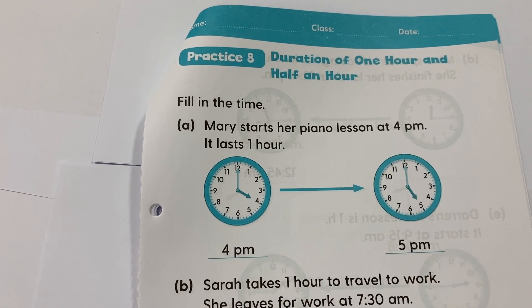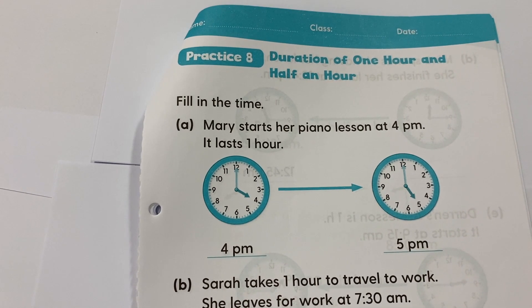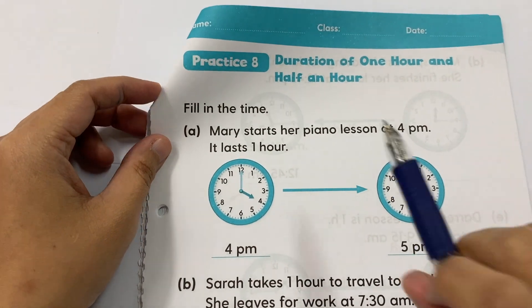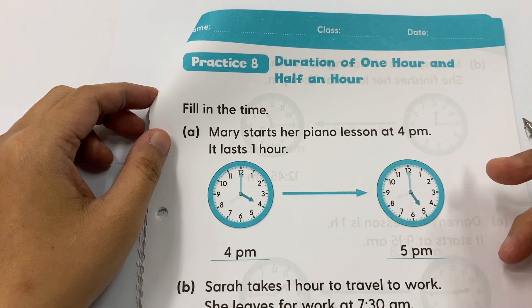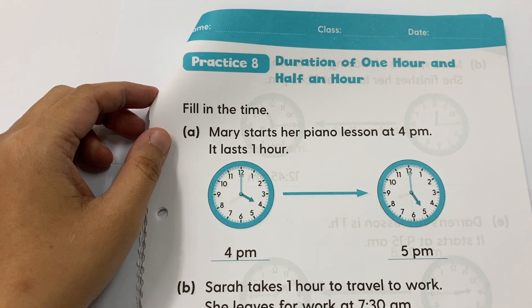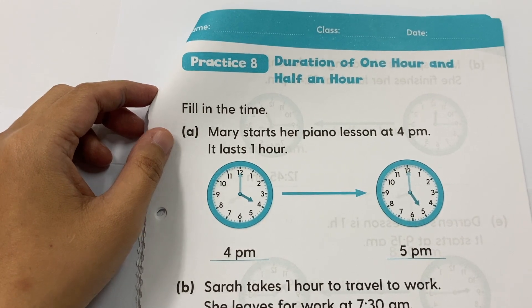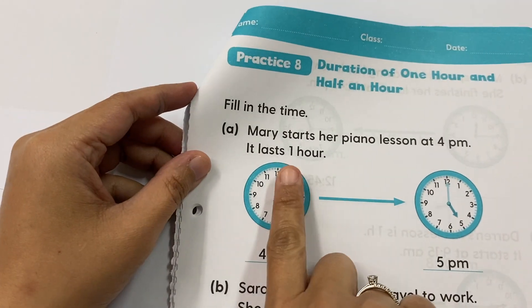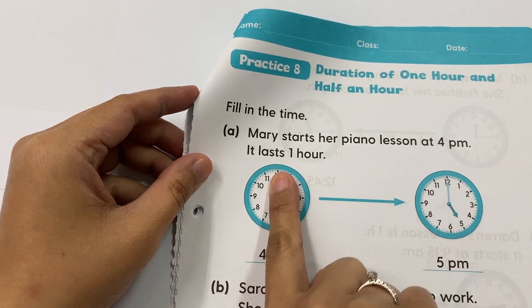Good morning everybody. Today we are still on the topic of time and we are going to look into duration of one hour and half an hour. The word 'half an hour' tells you that it's actually half of something — half of a whole. So if you have half an hour, it means it's exactly half of the time, and the clock will be divided into half parts.